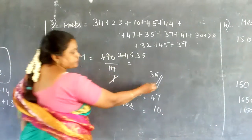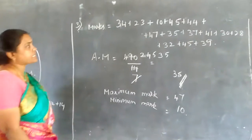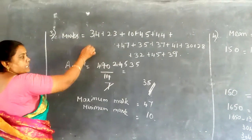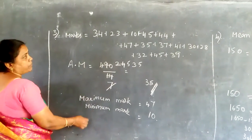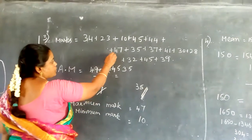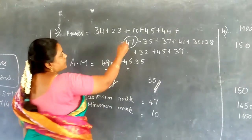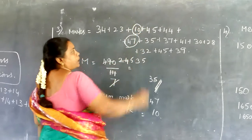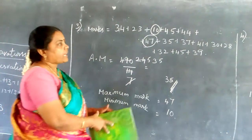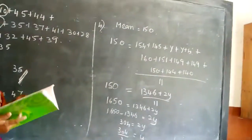So 35 is the average or arithmetic mean for this question. We are also asked to find the maximum mark and the minimum mark. The maximum mark is the highest score, which is 47, and the minimum mark, which is the lowest, is 10.